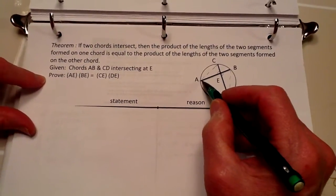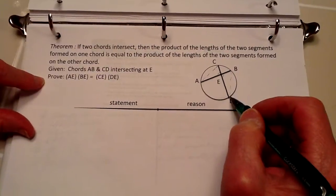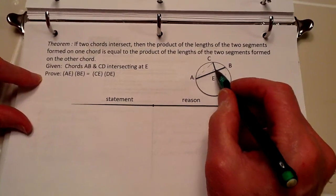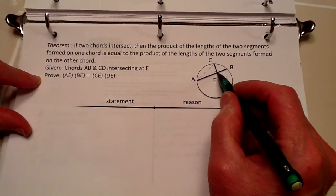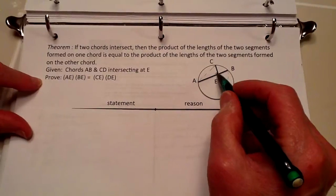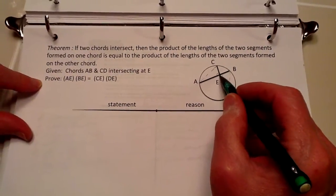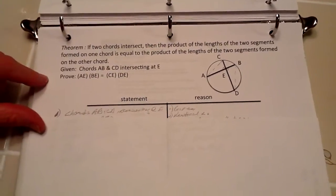Essentially, that means that AE times BE is going to be equal to CE and DE that multiply together, the product of those. So here's the two chords that intersect here at E.